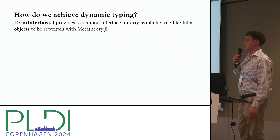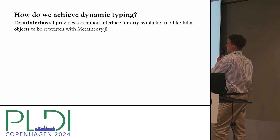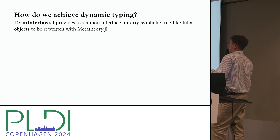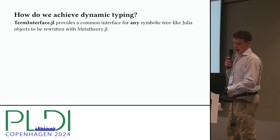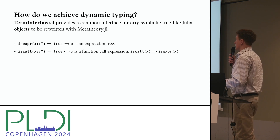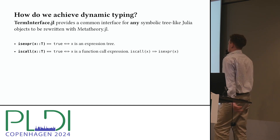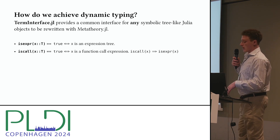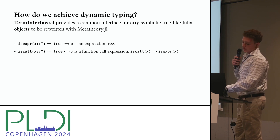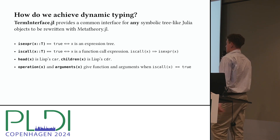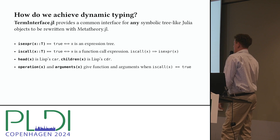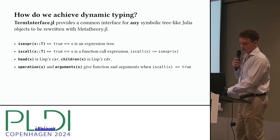To achieve dynamic typing, I want to highlight TermInterface. We spent a lot of time with folks at MIT designing an interface backwards compatible with Symbolics that works across the whole Julia ecosystem, enabling rewriting with classical rewriting and e-graphs on any tree-like Julia object. It's fairly simple: you define whether something is a tree node or leaf, differentiate function calls from other AST nodes, and implement head and children — equivalent to car and cdr in Lisp.